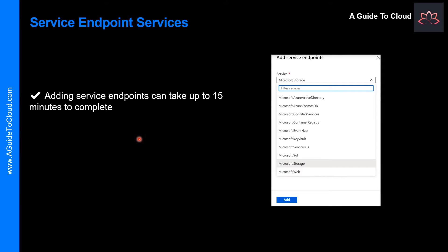You might wonder why you would use service endpoints. Some of the benefits are: improved security for your Azure service resources, optimal routing for Azure service traffic from your virtual network, and endpoints always take service traffic directly from your virtual network to the service on the Microsoft Azure backbone network — and it is simple to set up with less management overhead. Please note that with service endpoints, the source IP address of the virtual machine in the subnet for service traffic switches from using public IPv4 addresses to using private IPv4 addresses.